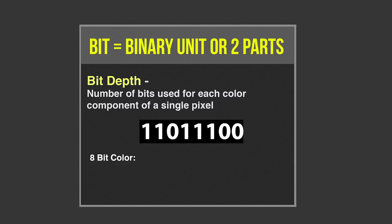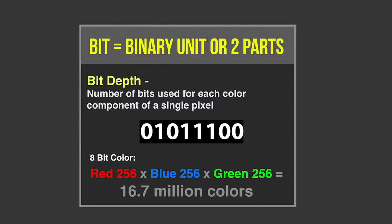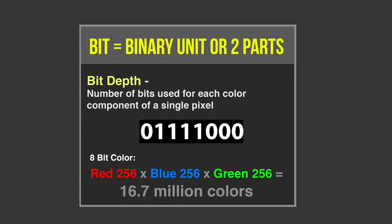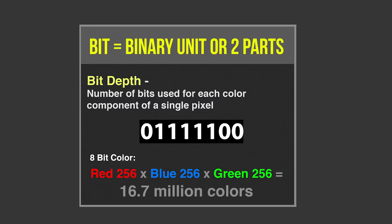Eight-bit means there are eight binary units in this particular calculation. If you go through all the possible combinations of eight-bit depth, there are 256 possible combinations. That means there are 256 shades of red, 256 shades of blue, 256 shades of green. When you multiply those different shades together, we get 16.7 million different possible combinations of colors. So bit depth refers to the number of binary units that determine the total number of color shades for a particular file.